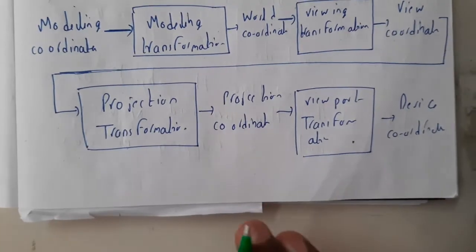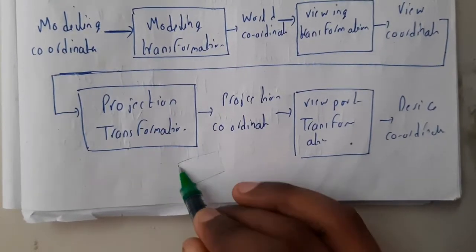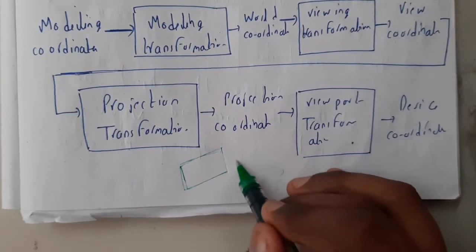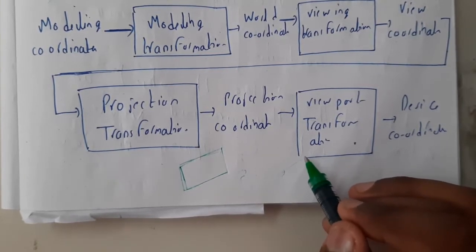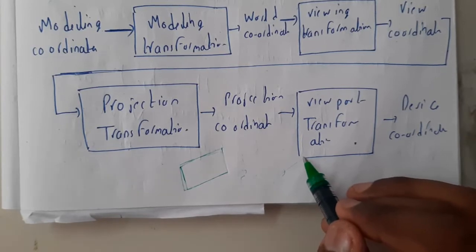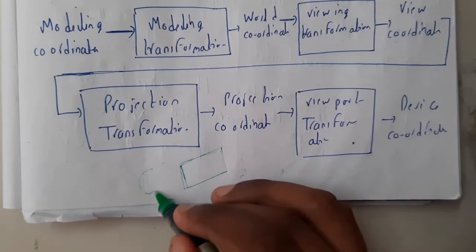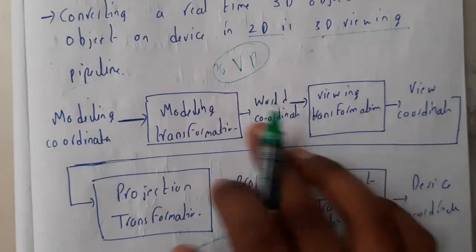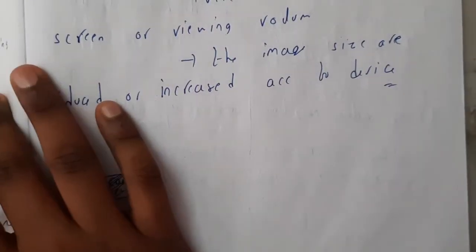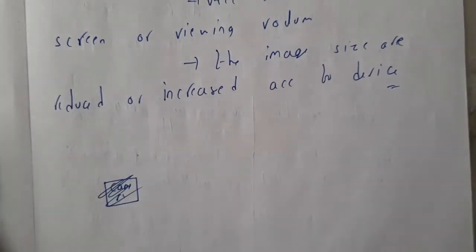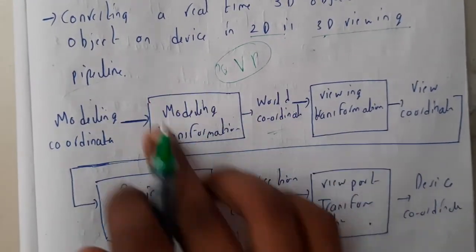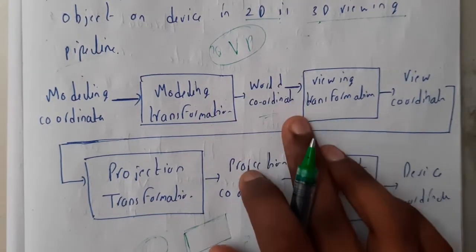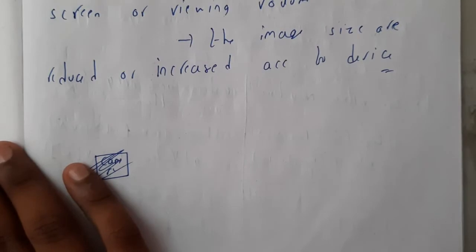Let me explain with an example. Assume your college has completed, farewell is done, and you are waiting for your final group photo. Initially all your friends are at different locations — one is in the classroom, one is talking with juniors, some are with teachers, some are busy in other activities. We know those locations through model coordinates, which are passed to modeling transformations to get world coordinates — identifying the exact position of each object.